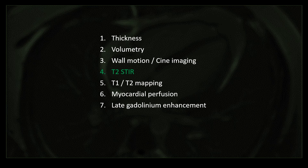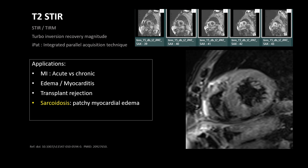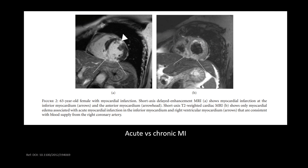Now coming to T2 STIR images. Just like any other part of the body, STIR is mainly used to look for edema. In cardiac MRI, STIR images appear as TIRM or black blood imaging. Applications include differentiating acute versus chronic MI, looking for myocarditis or transplant rejection, and detecting patchy myocardial edema in sarcoidosis. For example, on a late gadolinium enhancement image showing two areas of enhancement, if the corresponding STIR image shows edema in only one area, we can conclude that one is an acute infarct and the other is a chronic infarct.